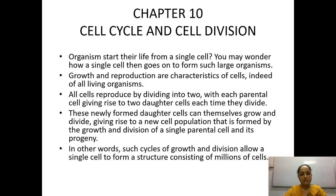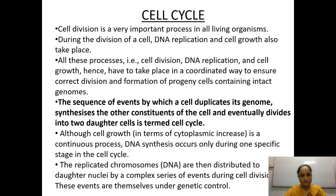Such a cycle of growth means the newly formed cell increases in cytoplasm, DNA is replicated, and therefore it divides. This allows a single cell to form a structure consisting of millions of cells. In this way, one cell gives rise to millions of cells in the process of cell division.